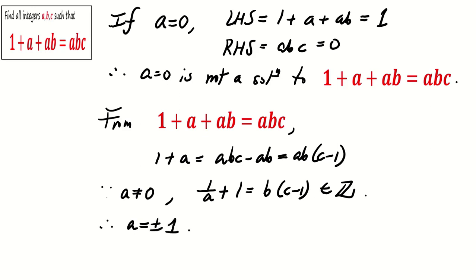If a = -1, then b(c - 1) = 0, and therefore b = 0 or c = 1.